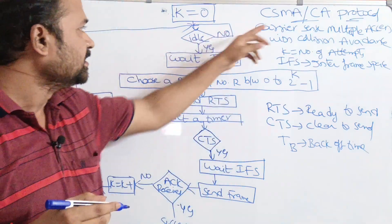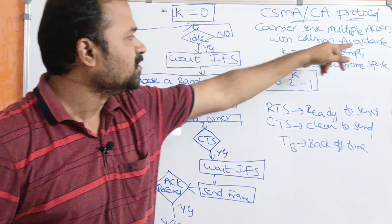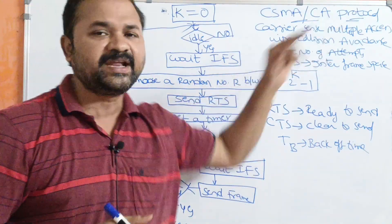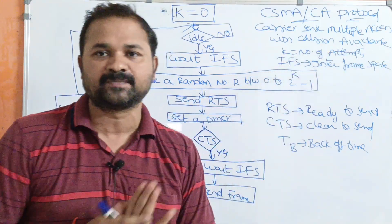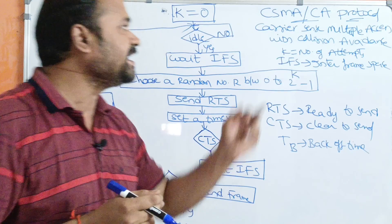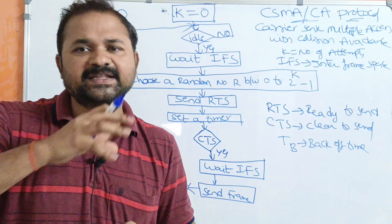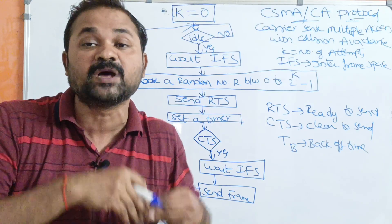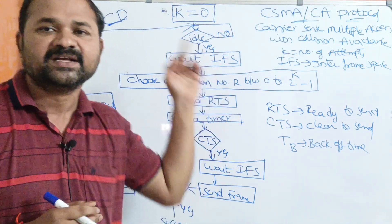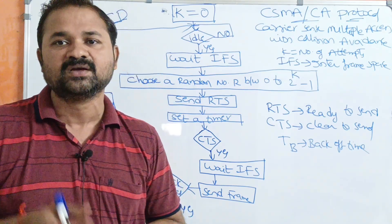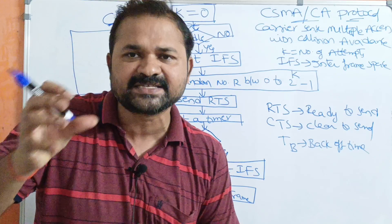Let us discuss CSMA/CA protocol — it stands for Carrier Sense Multiple Access with Collision Avoidance. Collision avoidance means we have to take necessary steps to avoid collision. We have already seen CSMA with CD; in that concept, after getting the collision, steps are taken to improve performance. The difference is: collision detection deals with steps after a collision, whereas collision avoidance takes steps so that no collision occurs.